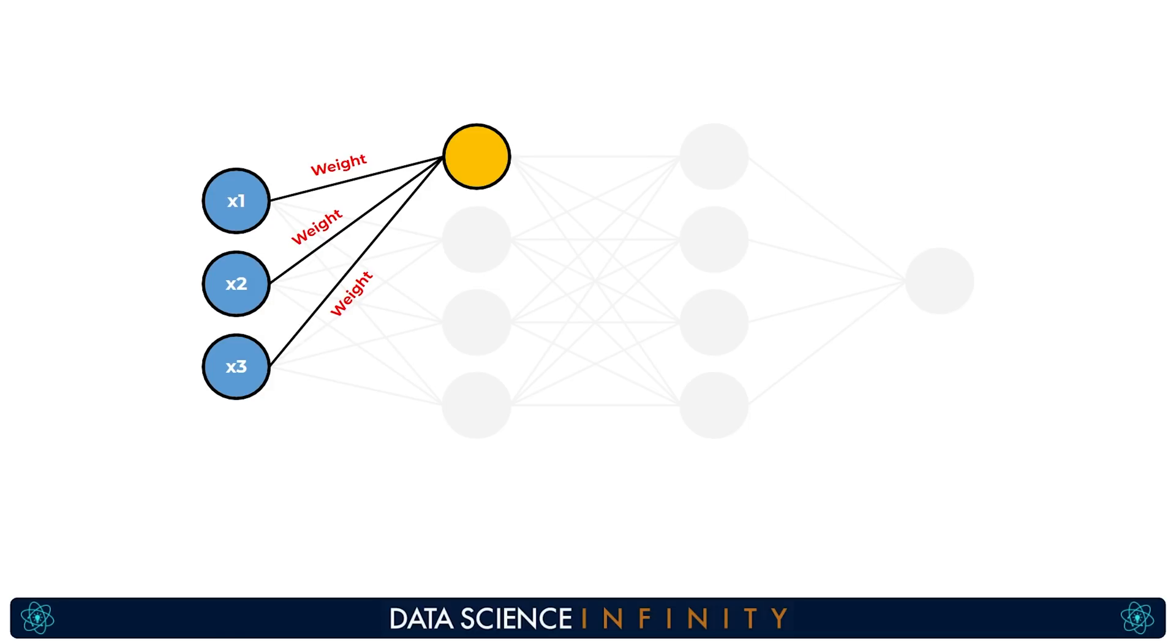Don't worry if that makes no sense right now we will cover all of this in the next tutorial. For now just know that bias values have a big role in determining whether their specific neuron will be fired or activated or whether it will not. In other words they will help determine whether the values from the inputs and the weights push past some threshold that the activation function requires.